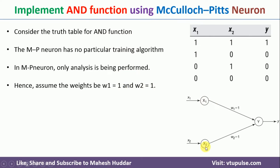With w1 equals 1 and w2 equals 1, the network looks like this: the input layer has two neurons and the output layer has one neuron. x1 and x2 are the inputs, and w1 and w2 are the weights. We need to consider each input combination and find the net input yin at the output node y.